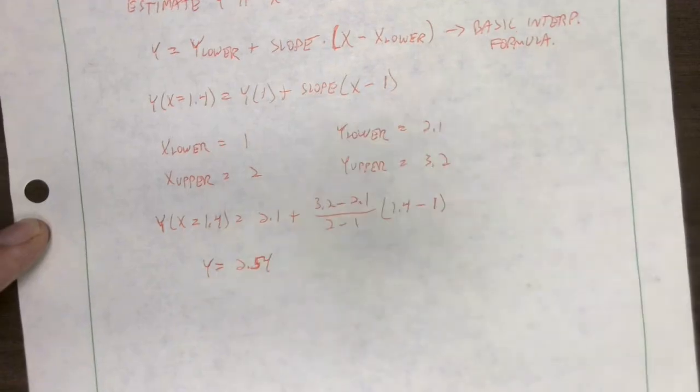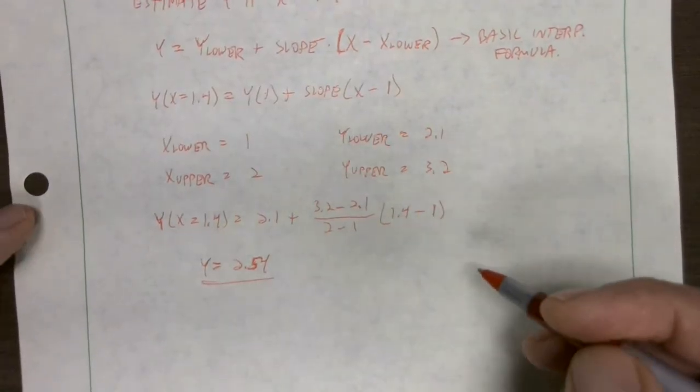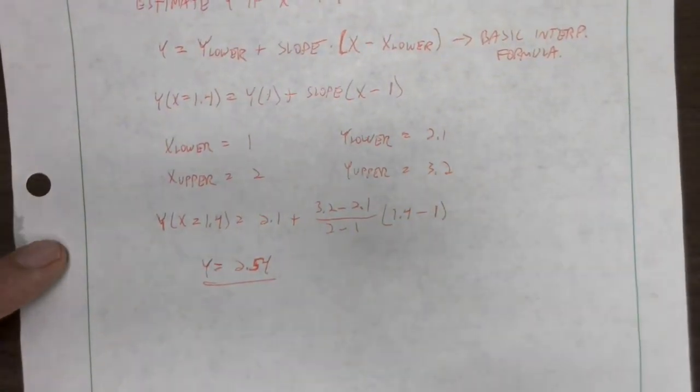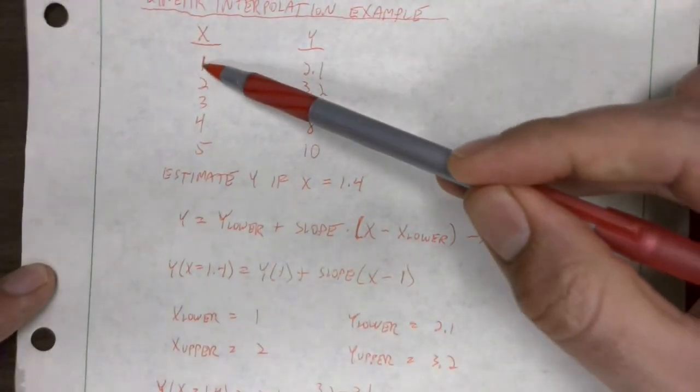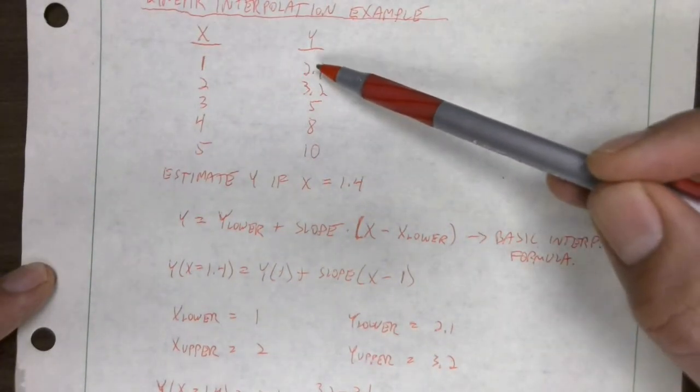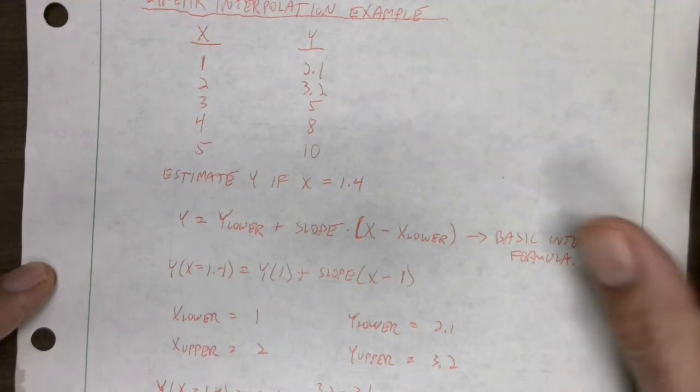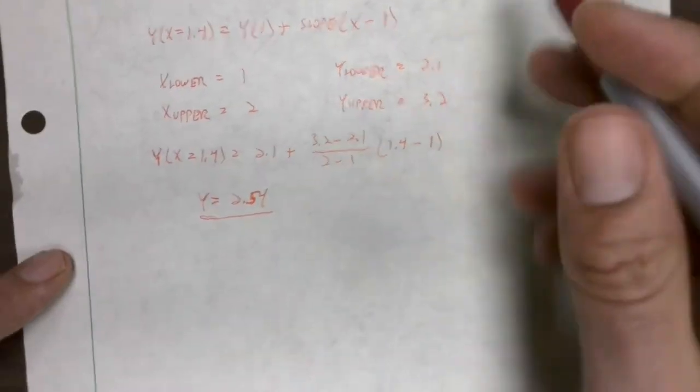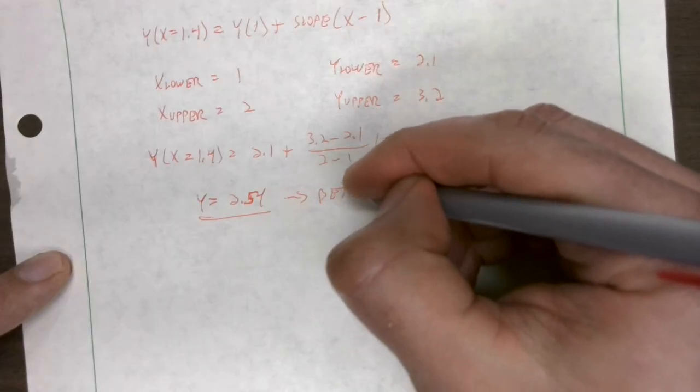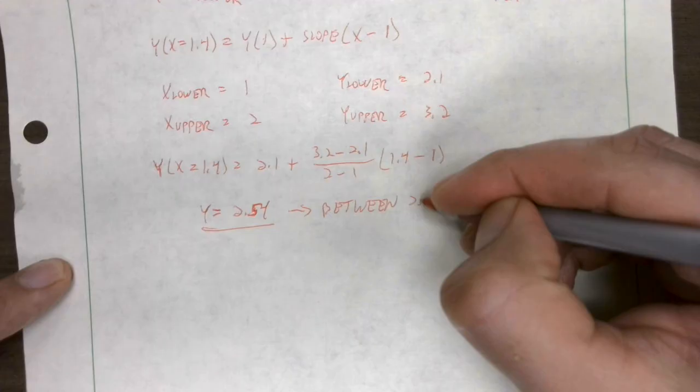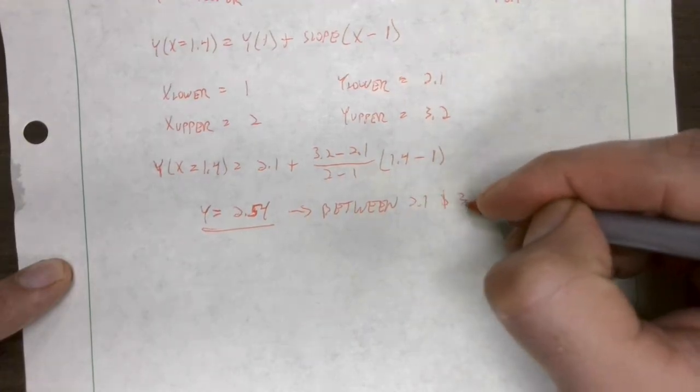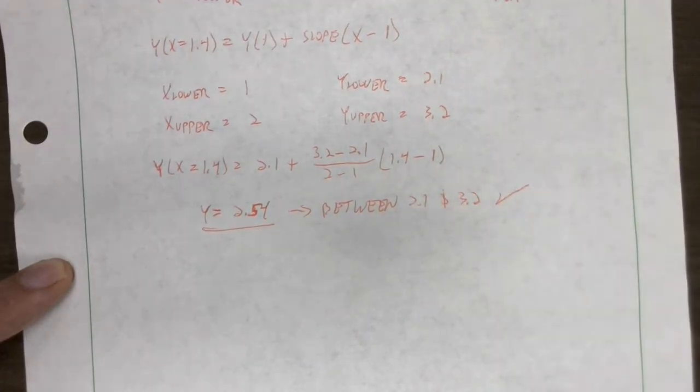2.54. Remember to do our sanity check. We said if x is between 1 and 2, then our y value better be between 2.1 and 3.2. So 2.54 is between 2.1 and 3.2, so we're good.